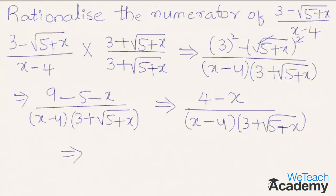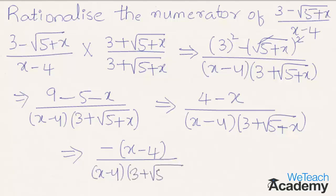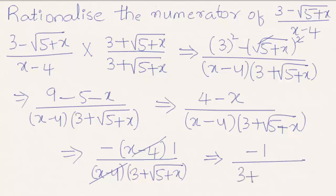That implies we can write 4 minus x as minus of x minus 4. So x minus 4 in the numerator and x minus 4 in the denominator cancel, and we get here minus 1 divided by 3 plus under root 5 plus x.